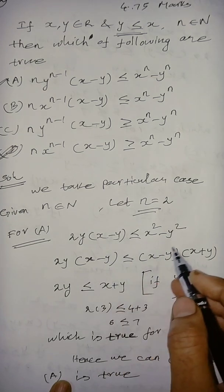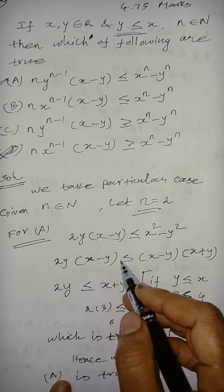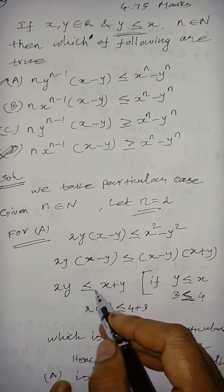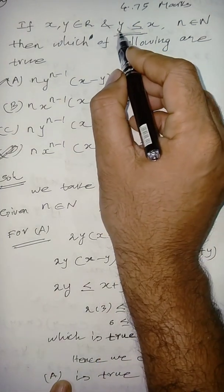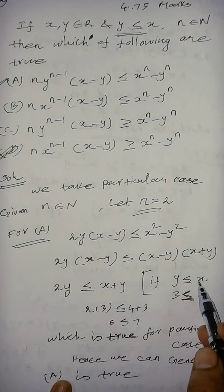Then, these terms are cancelled. So, 2y gets cancelled, 2y less than or equal to x plus y. So, what is the given one? y less than or equal to x. So, y less than or equal to x.